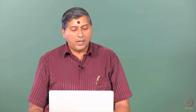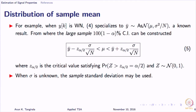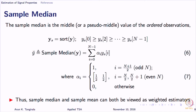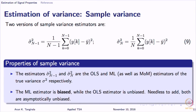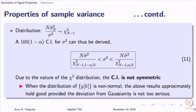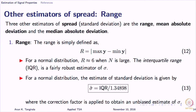We already know that the sample mean has an asymptotically Gaussian distribution. I am going to go straight to estimation of covariance, because estimation of variance is a special case of estimation of covariance. We have talked about sample variance, therefore I am skipping it.